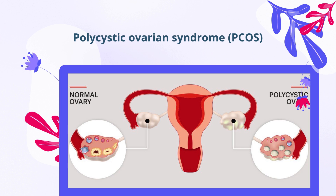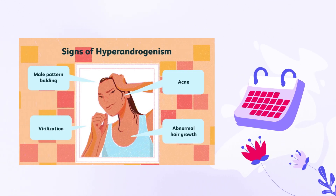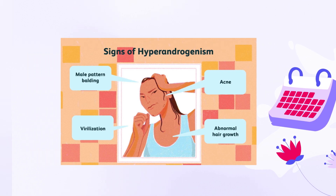PCOS causes women to ovulate irregularly or not at all. Sometimes PCOS is associated with elevated levels of testosterone, which can also cause excessive hair growth and acne. Premature ovarian insufficiency, POI, occurs when a woman's ovaries fail before she is 40. It is sometimes called premature menopause.